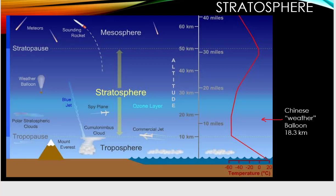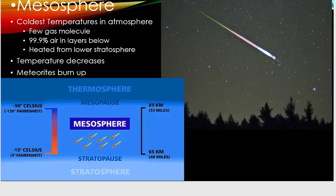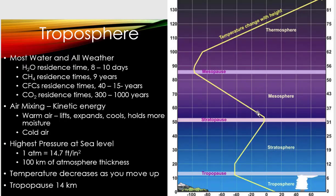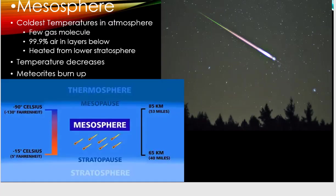Moving on to the next sphere — the mesosphere — note that in the mesosphere we're looking at the coldest temperatures in the atmosphere. There are very few gas molecules up there; they're very widely spaced. About 99.9% of the air is in the layers below the mesosphere, so only about 0.1% would be in the mesosphere. Meteorites burn up in here, and there is a temperature decrease with altitude in this sphere.